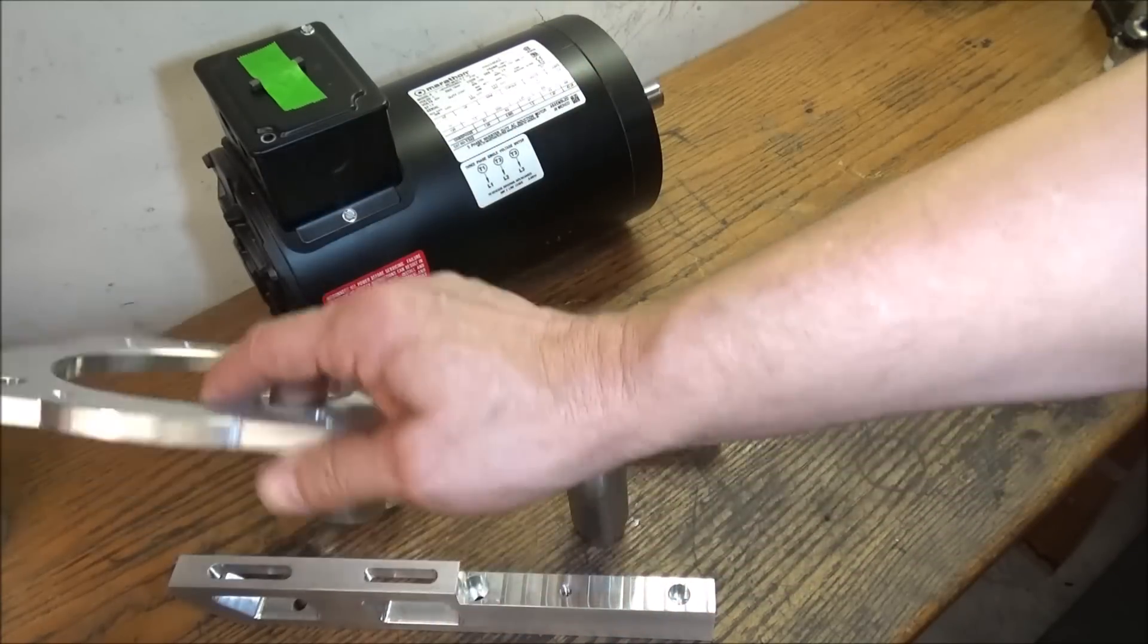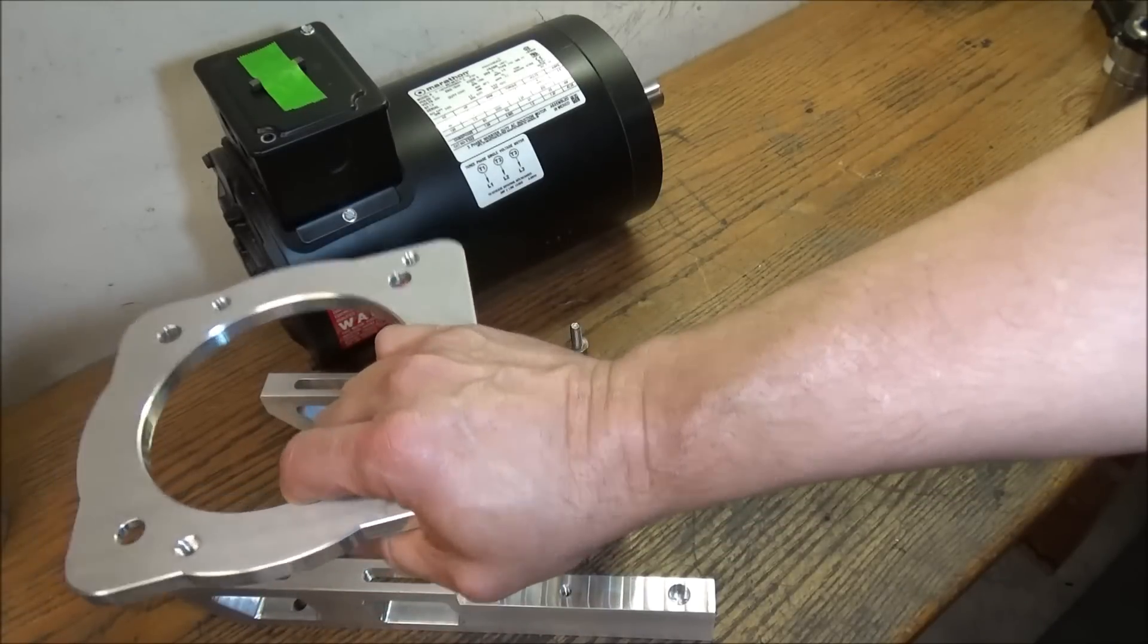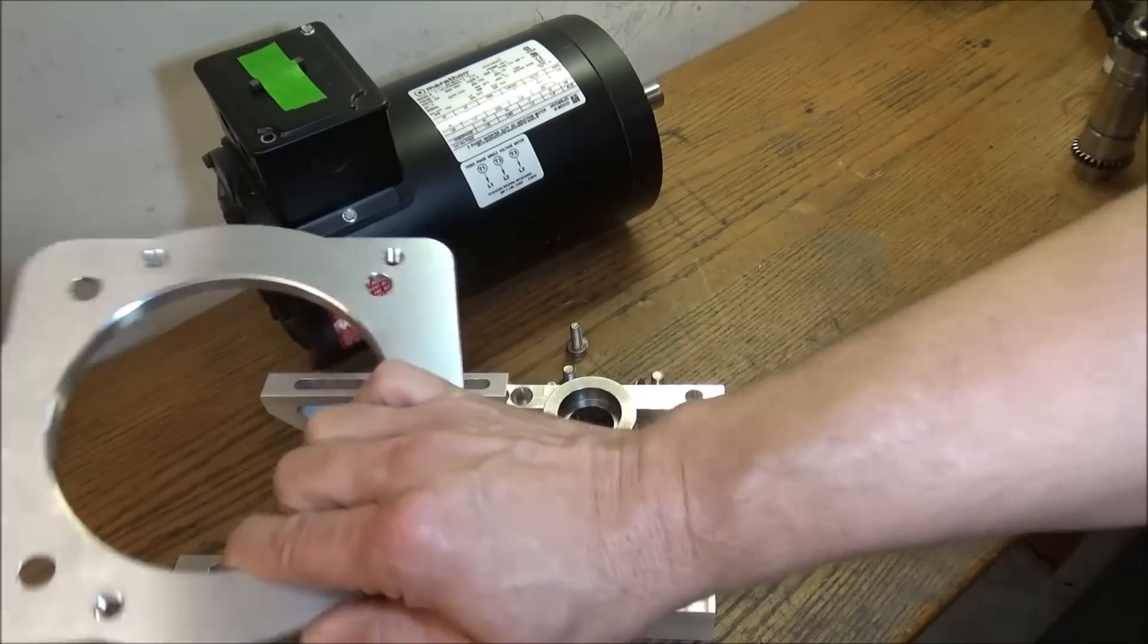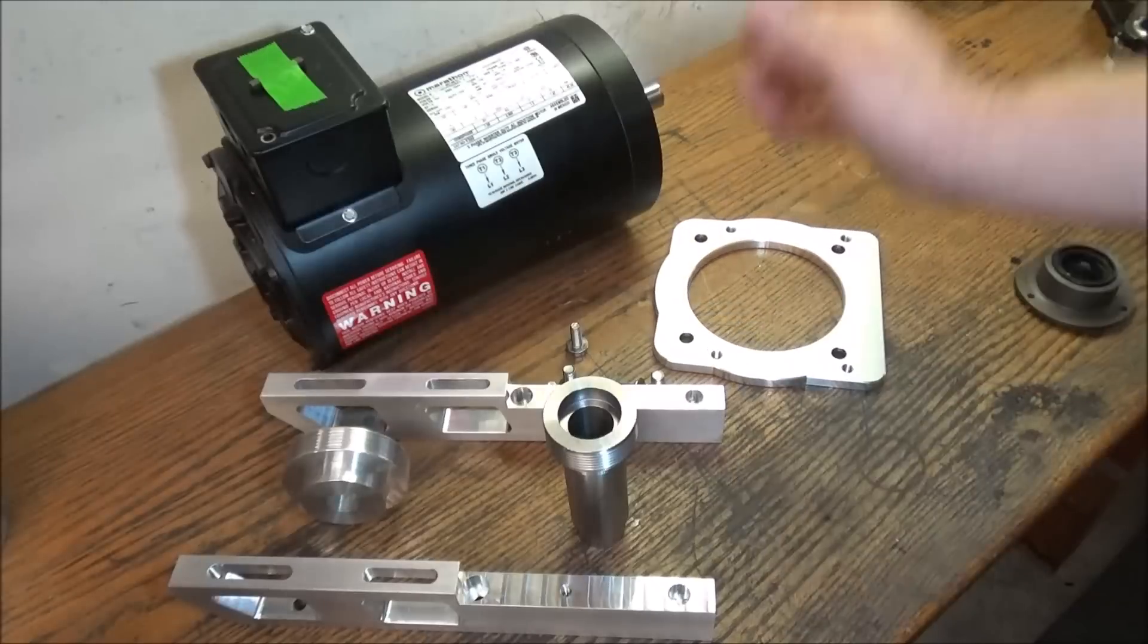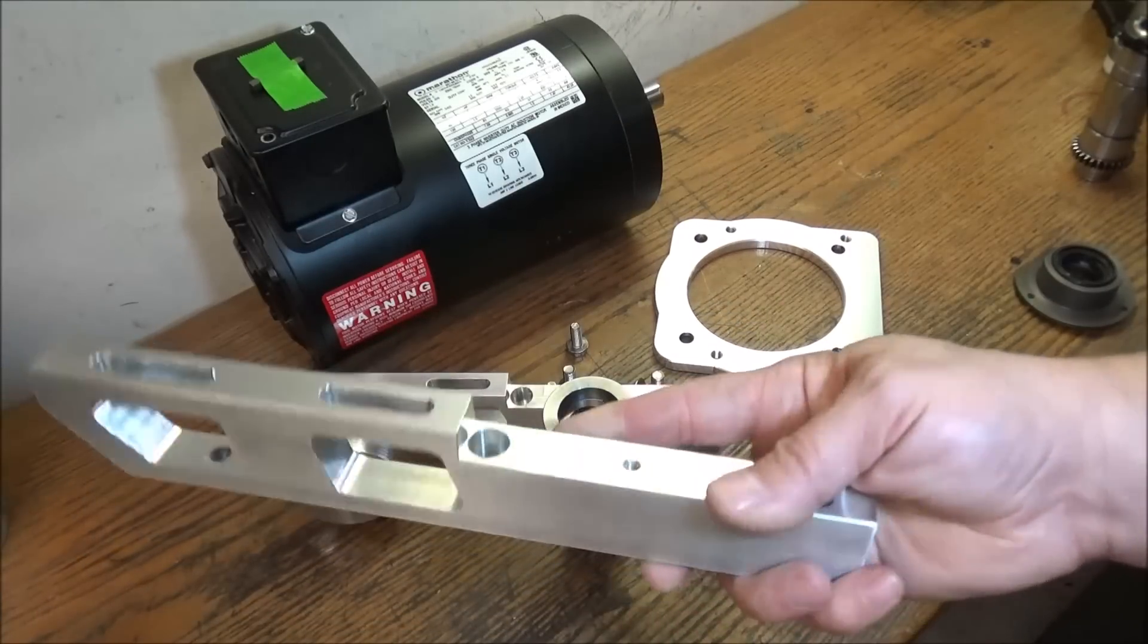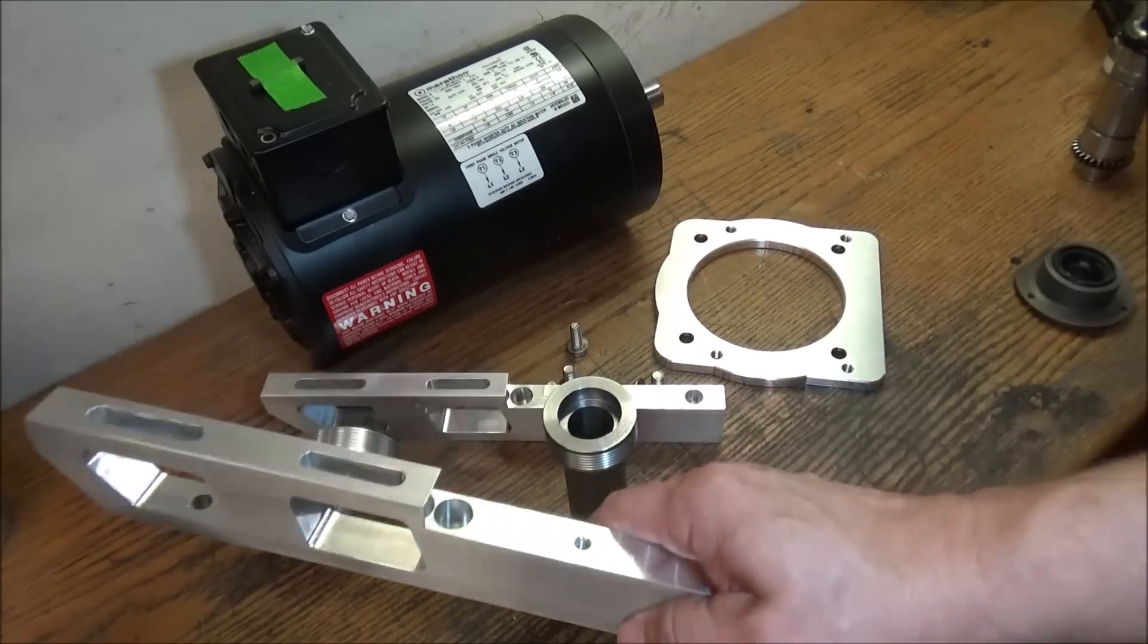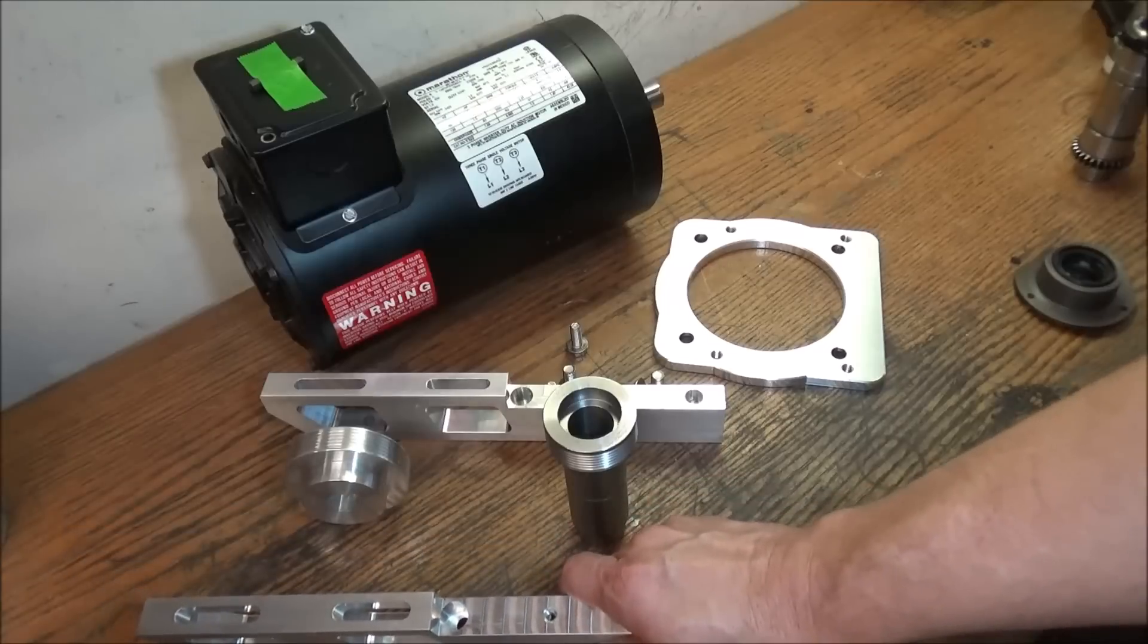A motor mount. This is 3/8 inch thick aluminum motor mount. Now this one happens to be for the 145 TC frame. However, we can machine other motor mounts for different motors. Just send us an email and we can work that out. It'll come with a couple of risers. These are three quarter inch wide risers that bolt right to the top of the Precision Matthews using existing holes.